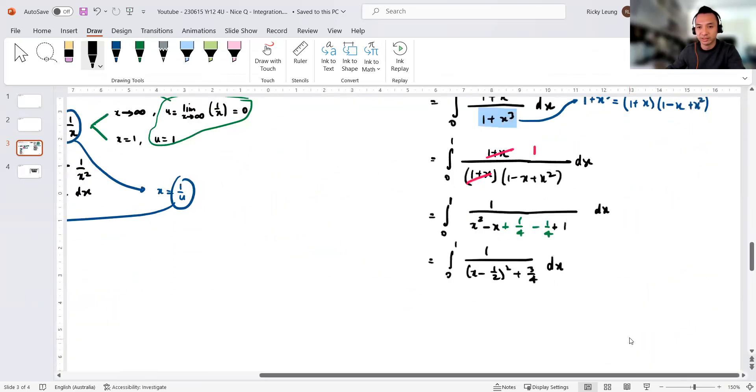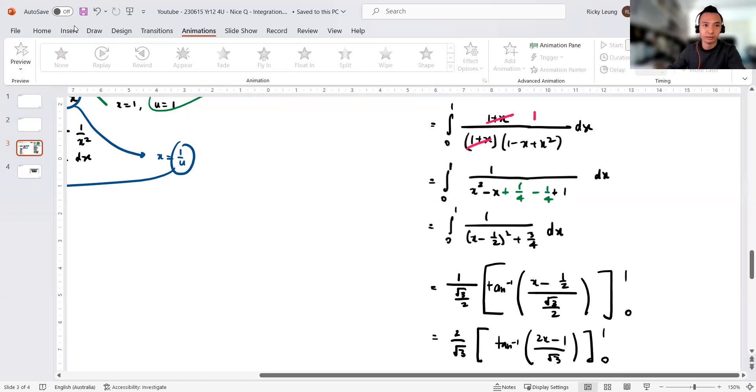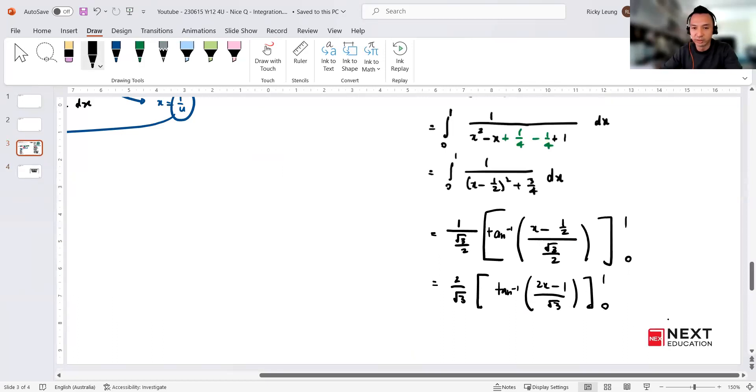All right guys, tan inverse. So tan inverse would be 1 on square root of 3/2 tan inverse of x minus 1/2 over root 3/2 with the limits of one and zero. So reciprocate that. Before I sub in, maybe times everything by two, just make my life easier. So in this fraction here, times everything by two, you get 2x minus 1 on root three, one and zero.